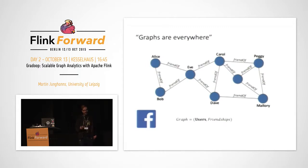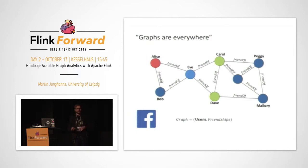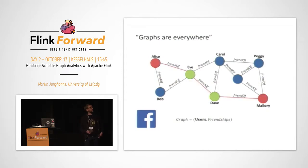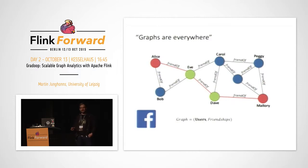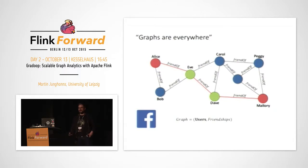In such a network you can ask recommender questions — things like what are possible friends for Alice, so people not directly connected to Alice but to Alice's friends. This is typically used in recommender engines. A more global question is: what's the shortest path between Alice and Mallory? If you think about LinkedIn and look at another person's profile, you see how you are connected to that person — this is essentially the shortest path between the two users.